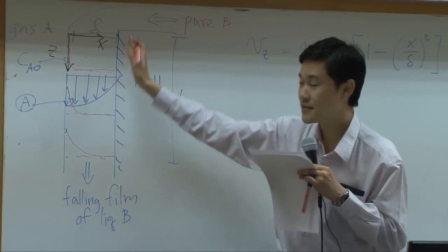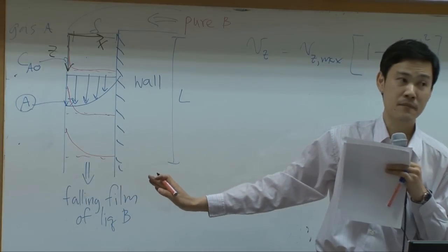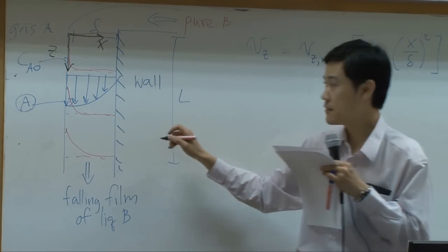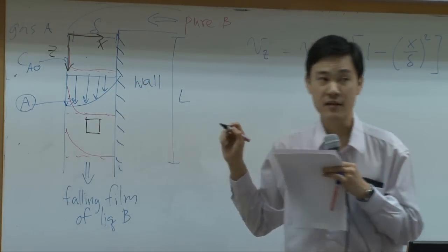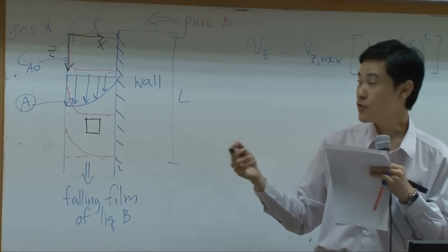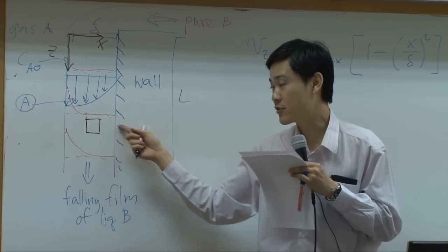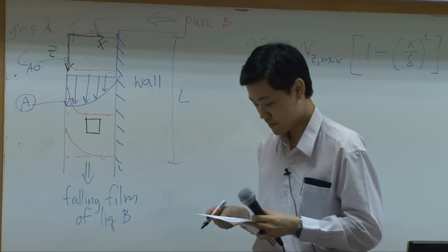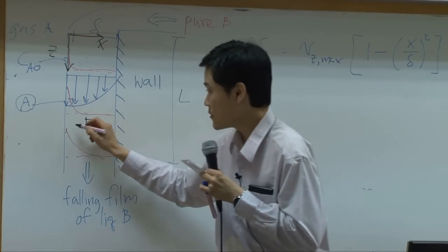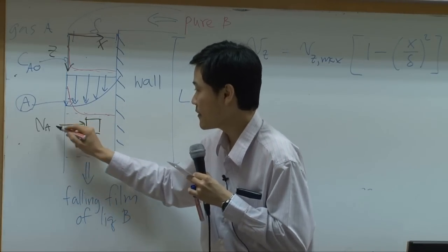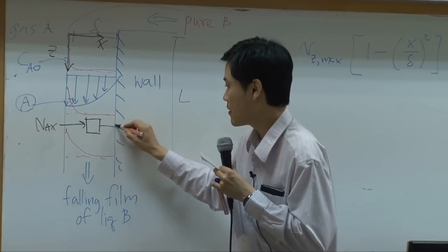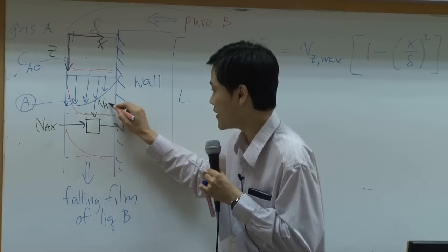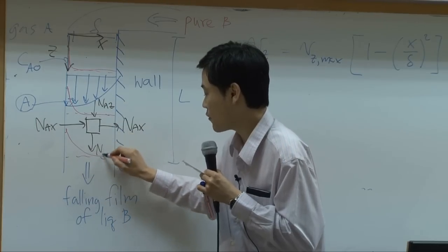Does concentration go down along the z direction or down along the x direction? Neither. It will be something like this because you have a difference in concentration in both the x direction and the z direction. So you have flux of A in the x direction going in and out, and you will also have flux of A in the z direction going in and out.